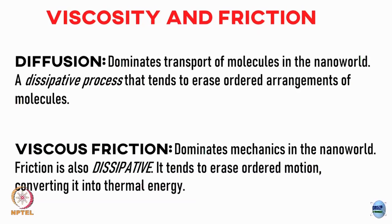Diffusion is a dissipative process in that it tends to erase ordered arrangements of molecules. If you started off with a delta function like we saw, eventually you will go to a flat peak through a Gaussian. It tends to erase any order that you might have in the system. Similarly, viscous friction dominates mechanics in the nano world — this is also dissipative, it tends to erase ordered motion and converts it into random thermal energy. This viscous friction is what we will try to talk about today: how to characterize and quantify it.